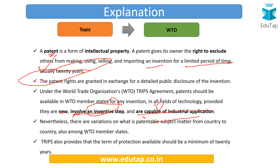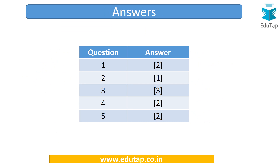One more very important thing: patents are territorial rights. This means that the exclusive rights are only applicable in the country or region in which the patent has been filed and granted.